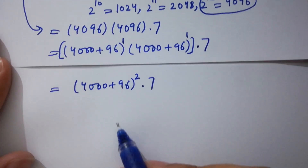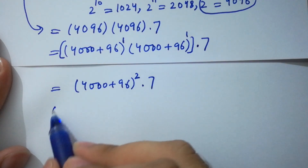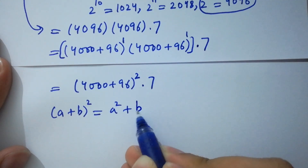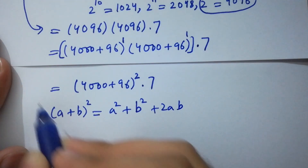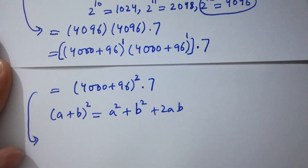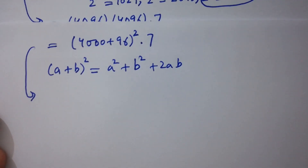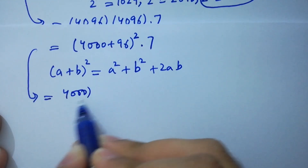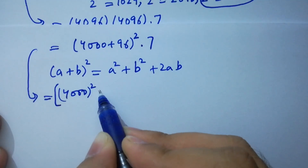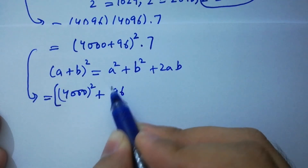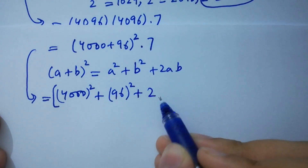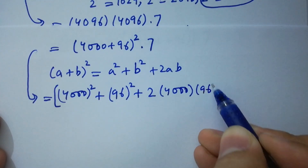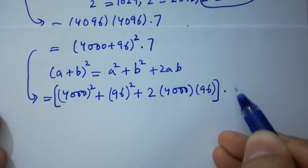In the next step, we expand using the identity: (a + b)² = a² + b² + 2ab, where a is 4000 and b is 96. So we get 4000 squared plus 96 squared plus 2 times 4000 times 96, all times 7.